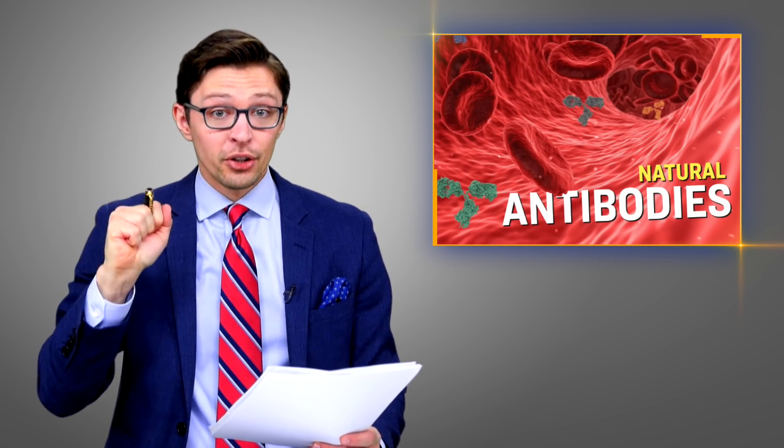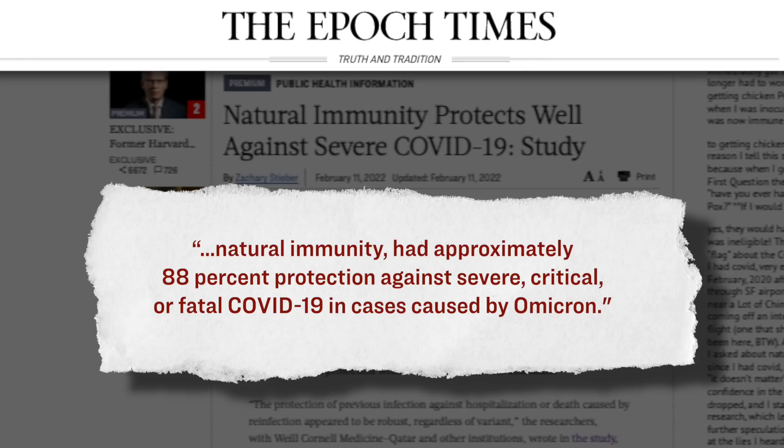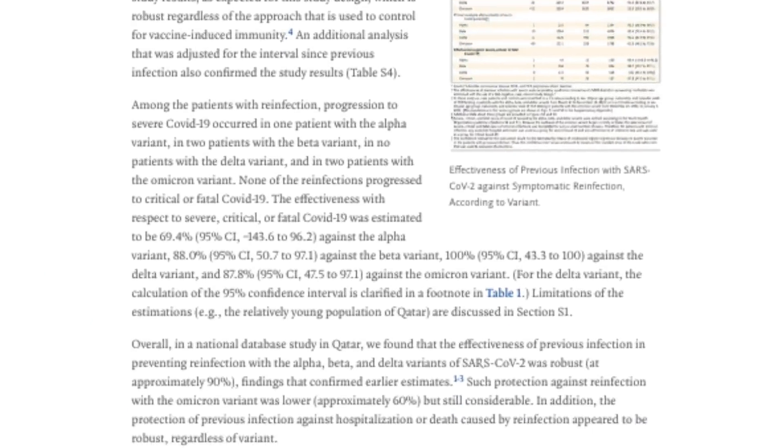They found that natural immunity equipped people well against severe disease from the Omicron variant. Specifically, the researchers found that people with natural antibodies had approximately 88% protection against severe, critical, or fatal COVID disease that was caused by the Omicron variant. Think about that—88%. That led the researchers in the study to write this: 'The protection of previous infection against hospitalization or death caused by reinfection appeared to be robust, regardless of the variant.'